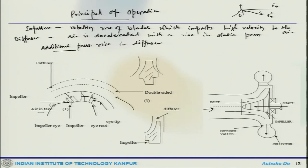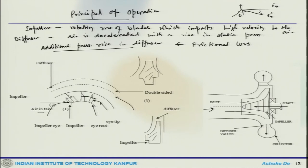In the centrifugal compressor you have additional pressure rise in the diffuser through the diverging process. One has to take into consideration the frictional losses — there will be some loss in stagnation pressure due to friction. In typical design practice, half the pressure rise happens in the impeller and half happens in the diffuser. At the exit of the impeller the blades are straight, so the flow predominantly remains radial in that direction.